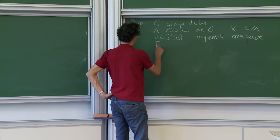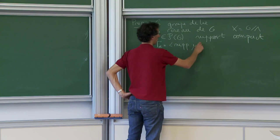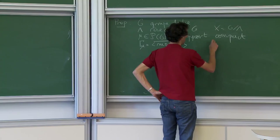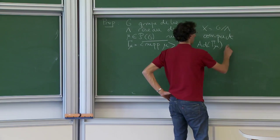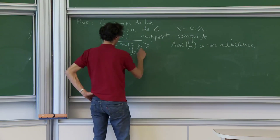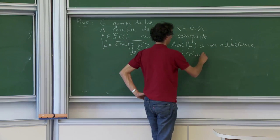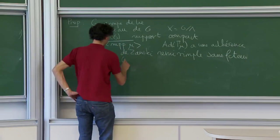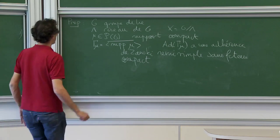Je suppose que si je note Gamma_mu le sous-semi-groupe fermé engendré par le support de mu — comme ça on ne sait pas si c'est sous-groupe ou semi-groupe, mais ça n'a pas d'importance. L'action adjointe de Gamma_mu, qui est maintenant un sous-semi-groupe du groupe linéaire de l'algèbre de Lie, a une adhérence de Zariski semi-simple sans facteur compact. Ce sont les hypothèses.